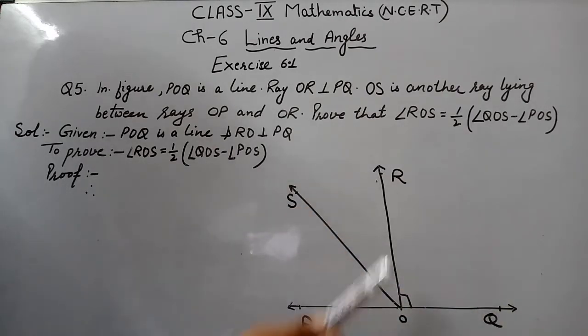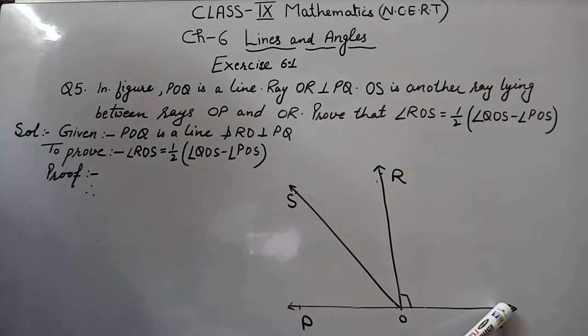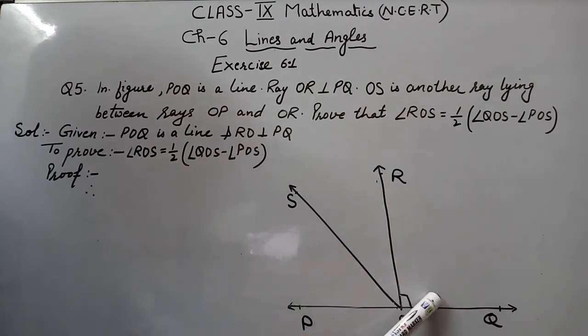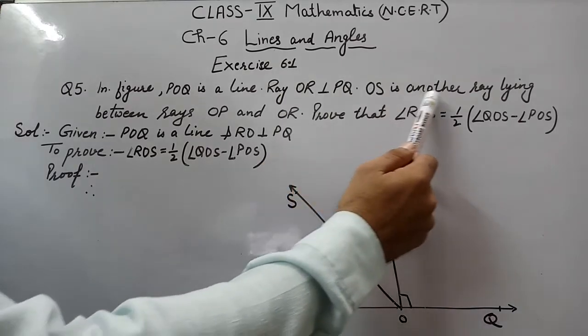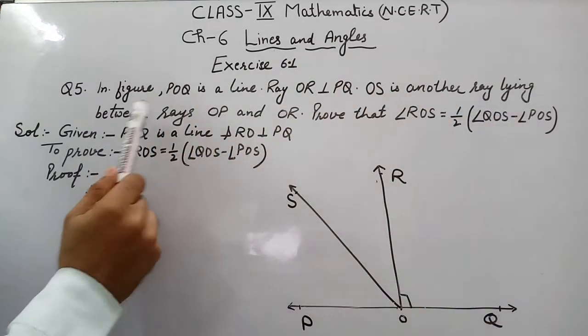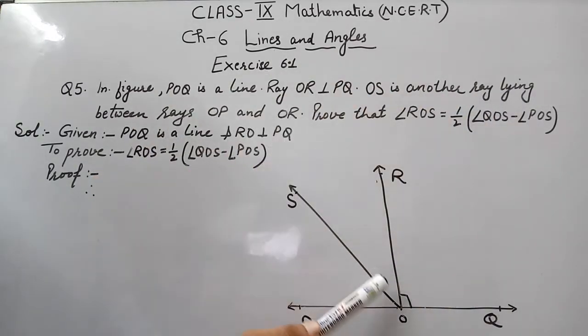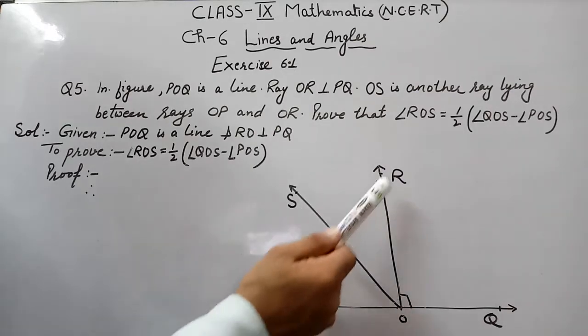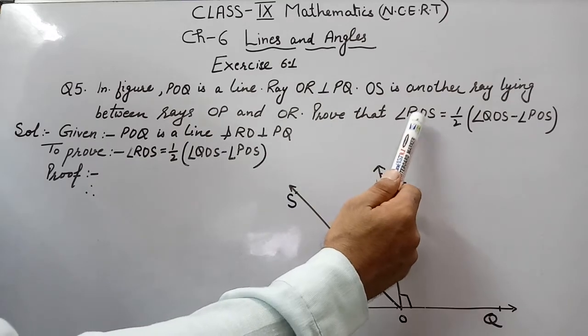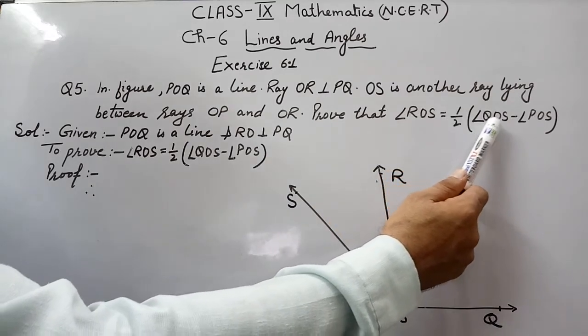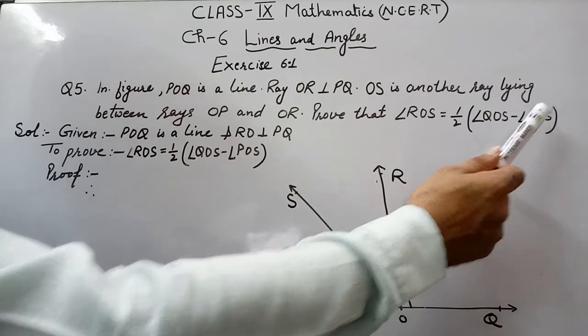It means angle ROQ and angle ROP both will be 90 degrees. Now, OS is another line between rays OP and OR. This is OS and this is between two rays OR and OP. Prove that angle ROS is equal to half of angle QOS minus angle POS.